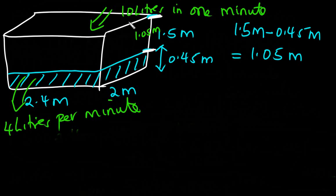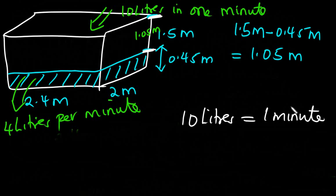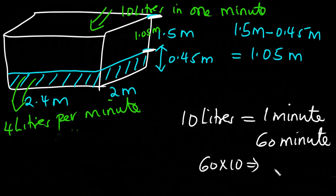In the first 1 hour, water is only allowed to flow in at the rate of 10 liters per minute. Let's get the amount of water that flows in during that 1 hour. If 10 liters enter in 1 minute, then in 60 minutes that is 60 times 10, which is 600 liters. That is the amount of water that gets in during the first hour.